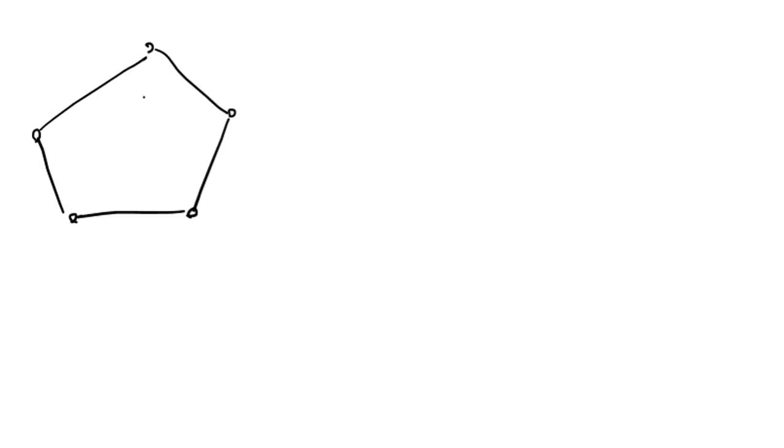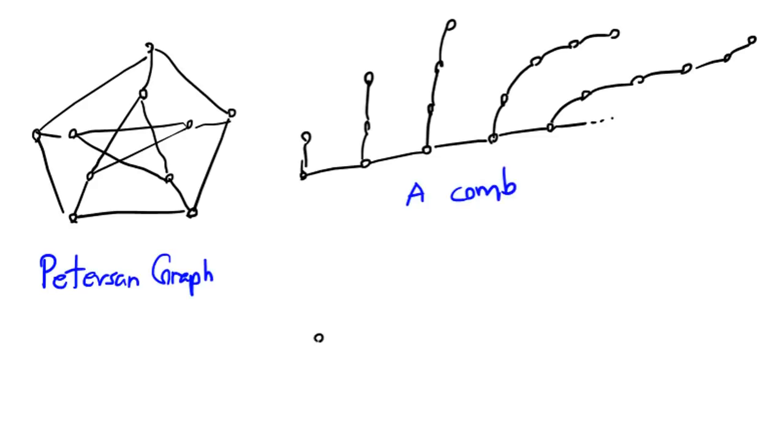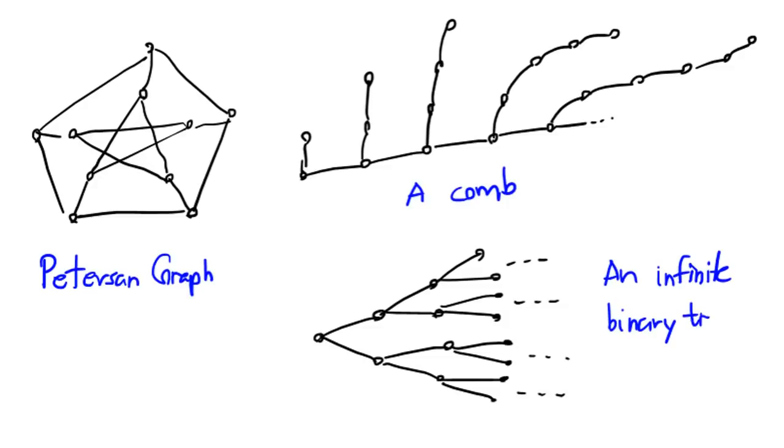This theorem is amazing. Just think about it. Every single finite or countably infinite graph you can imagine, no matter how complicated it is, can be found as an exact copy inside of the Rado graph. So the Rado graph is like the mother of all the finite and countably infinite graphs.